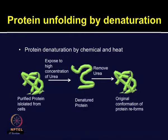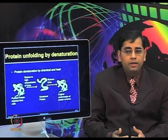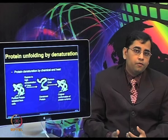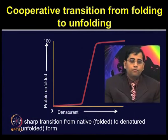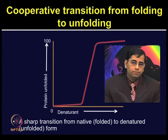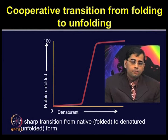If you take a purified protein isolate from cells and expose it to a high concentration of denaturants, whether chemical or heat, that will result in a denatured protein. If you remove the denaturing condition, it will again form the proper folding — the protein conformation will be restored to its original form. So how does this process of folding to unfolding work? Various hypotheses and mechanisms have been proposed. Let us talk about cooperative transition from folding to the unfolding form.